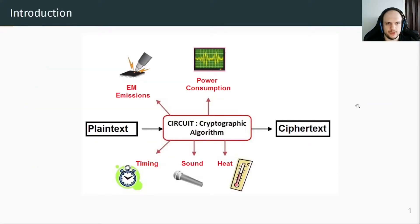A little introduction about side-channel attacks. Imagine you have a cryptographic algorithm running on a device. This cryptographic algorithm takes as input a plaintext and produces as output a ciphertext. During the execution of this cryptographic algorithm, the device provides different side-channels, such as electromagnetic emission, power consumption, timing, or heat. These side-channels are linked to the internal state processing of the device.